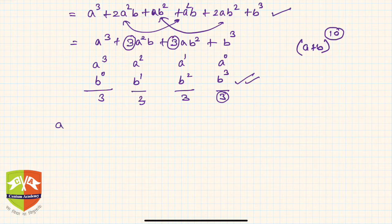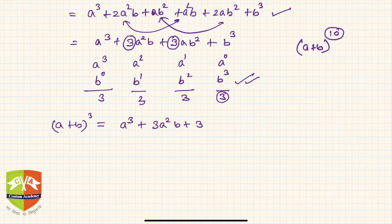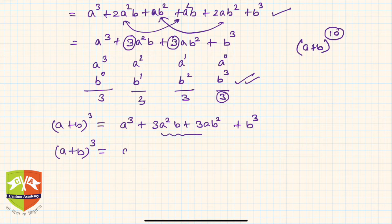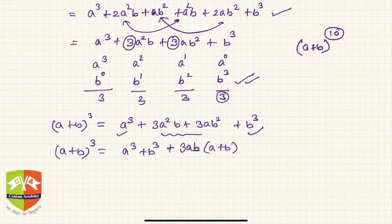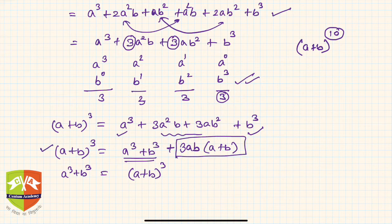Now let's manipulate this. Starting from a³ + 3a²b + 3ab² + b³, we can club a³ and b³ together, then take 3ab as common from the remaining terms, leaving (a + b). So: (a + b)³ = a³ + b³ + 3ab(a + b). Therefore a³ + b³ can be expressed as (a + b)³ minus the factor 3ab(a + b).